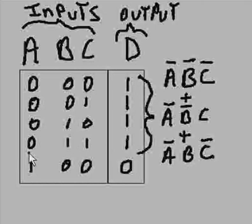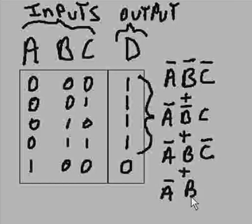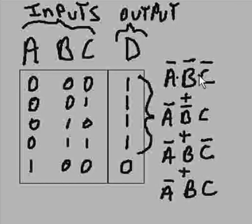All those zeros are getting knotted. Last one: not A, B, C. So I'm ORing that with not A, B, C. That's a big expression. All these terms are ANDed horizontally, but they are ORed vertically.